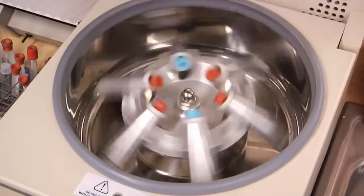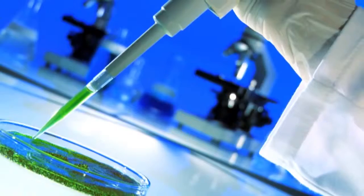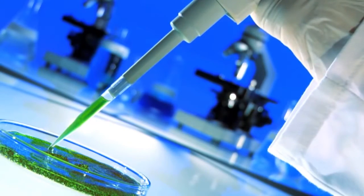Laboratory technicians then separate the stem and fat cells by using a centrifuge system. From here, the stem cells are placed in a petri dish and given food they need to grow.